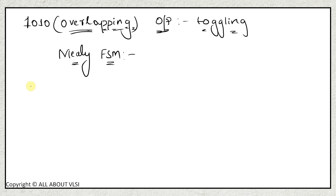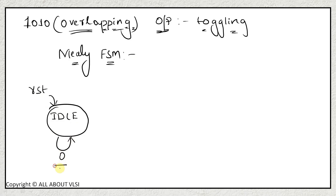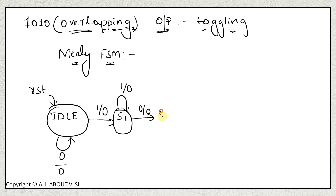If we apply reset, we go to the idle state. From idle, if you give 0 you stay in the same state with output 0. If you give 1, output is still 0 and next state is S1. If you give one more 1, you stay in S1 with output 0. If you give 0, you go to S2 with output 0.